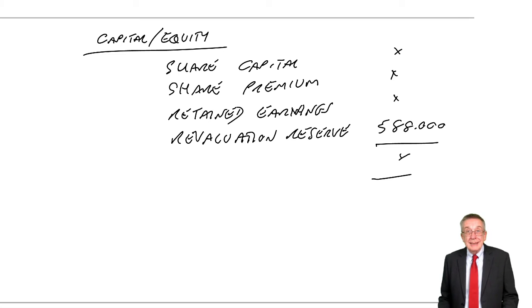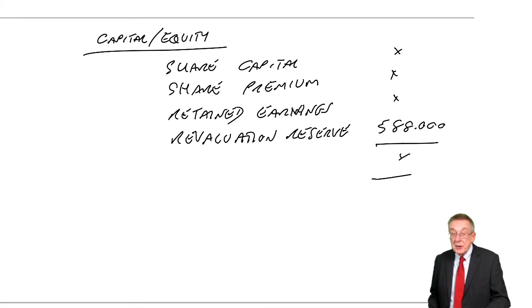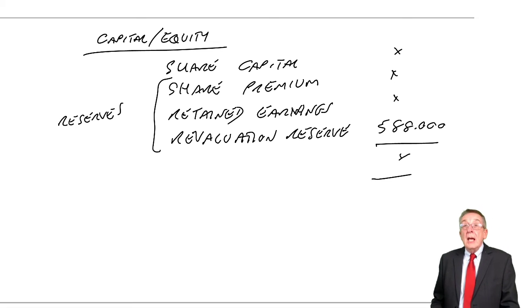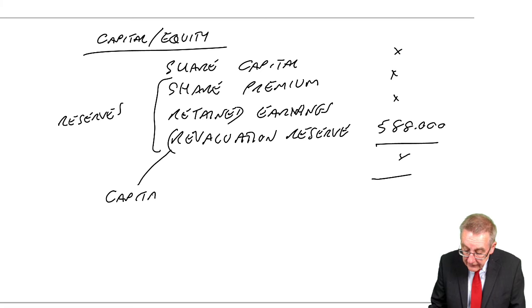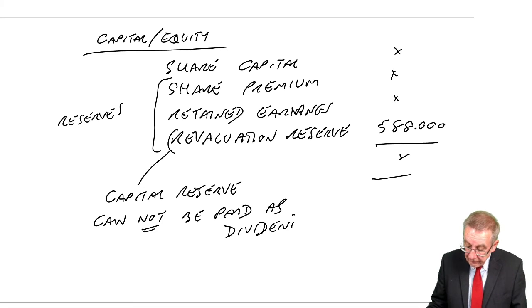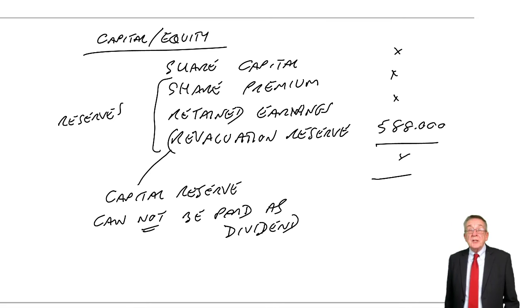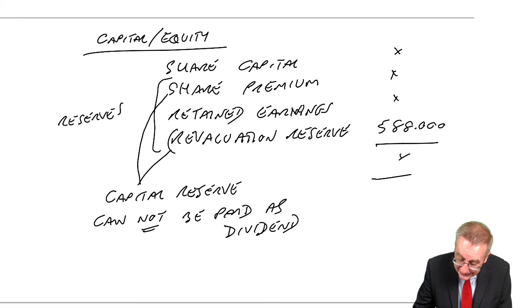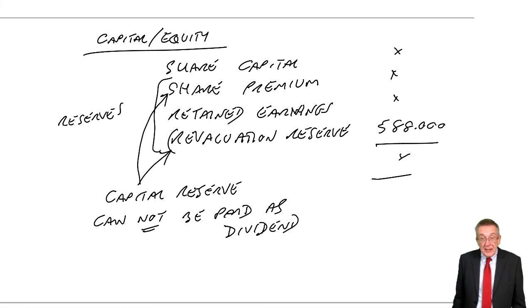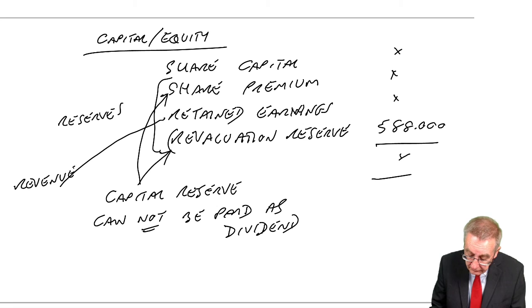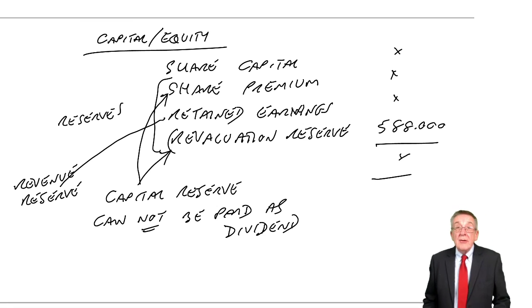A pure revaluation doesn't realise the profit, so it has to be shown separately — it's another example of a reserve. It is a capital reserve because again it cannot be paid as dividend. So we now have three reserves to worry about: retained earnings, share premium, and revaluation reserve. Share premium and revaluation reserve are capital reserves — they can't be paid as dividend. Retained earnings are a revenue reserve — they can be paid as dividend.